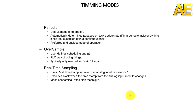Next, about the timing mode — we have 3 timing modes: periodic, oversample, and real-time sampling. The first mode is periodic, which is the default mode of operation. It automatically determines delta T based on the task update rate if in a periodic task, or by timing the last execution if in a continuous task. It is the easiest mode of operation.